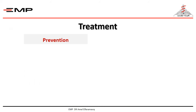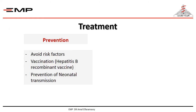Prevention of hepatitis B can be achieved by avoiding the risk factors. Vaccination with hepatitis B recombinant vaccine is recommended, with the first dose given within 24 hours after birth, then at 2, 4, and 6 months of age.